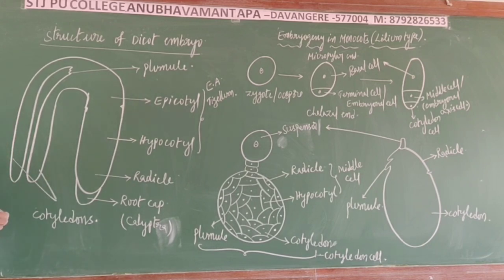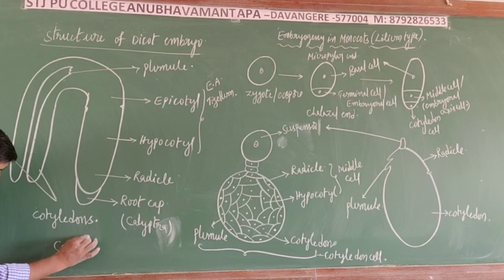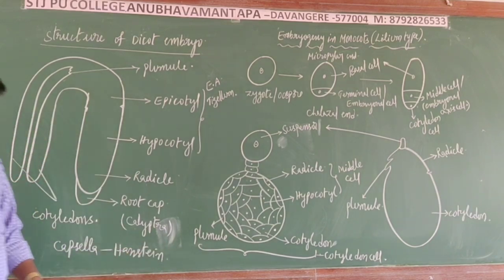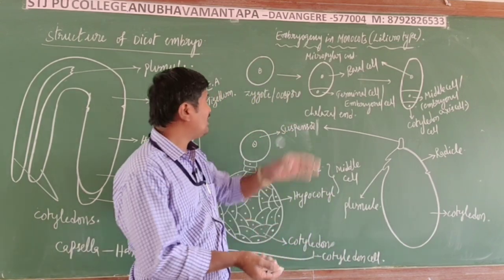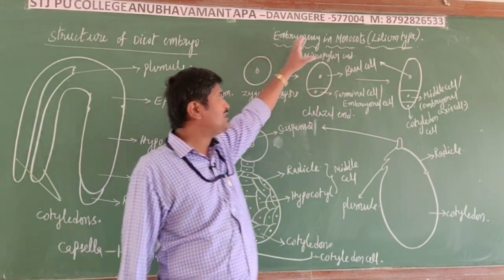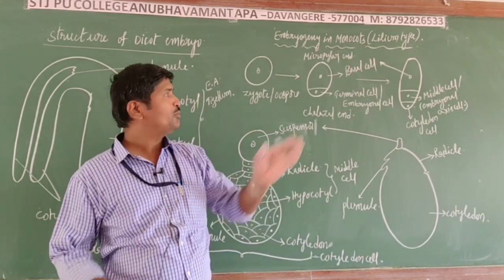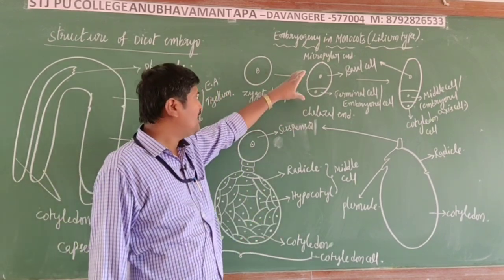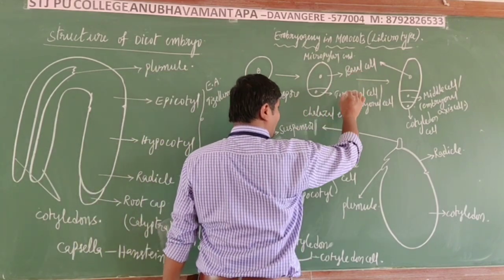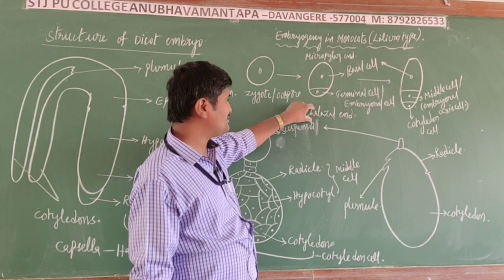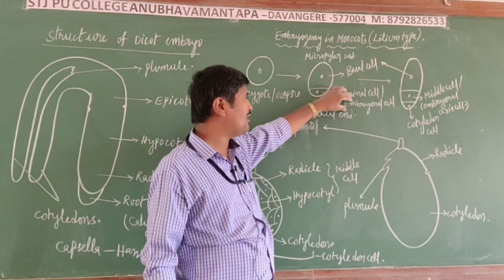The embryogeny in dicots is a common crucifer type, mostly reported in Capsella. Next, embryogeny in monocots follows the lilium type. The zygote undergoes unequal mitotic cell division, forming two cells: a large basal cell towards the micropylar end and a small terminal (embryonal) cell towards the chalazal end.